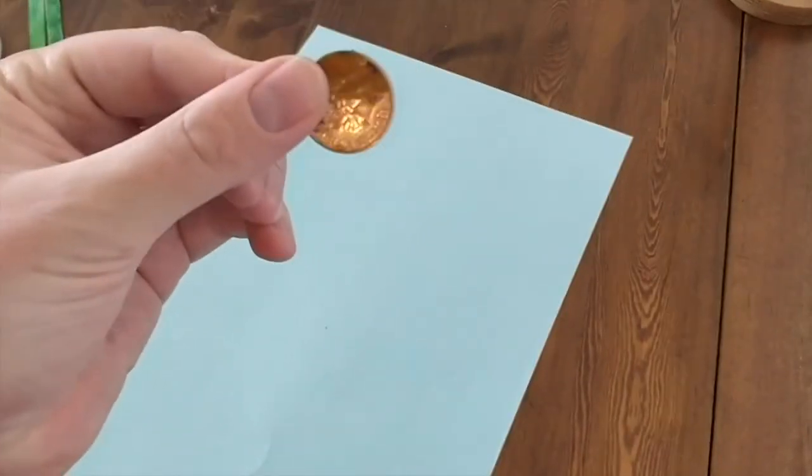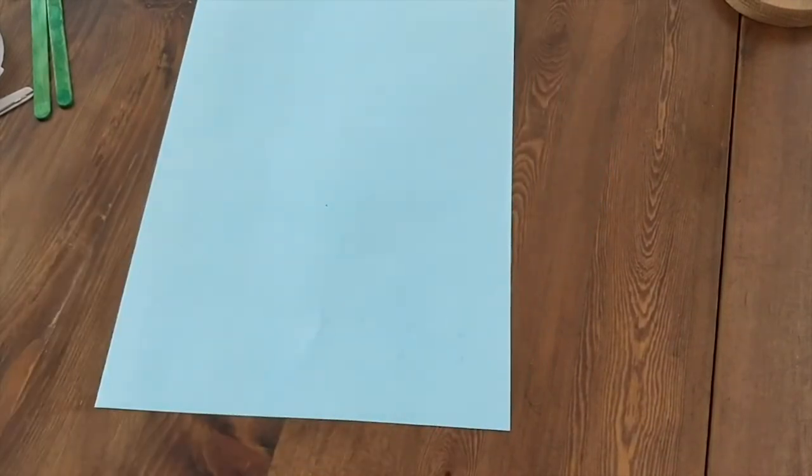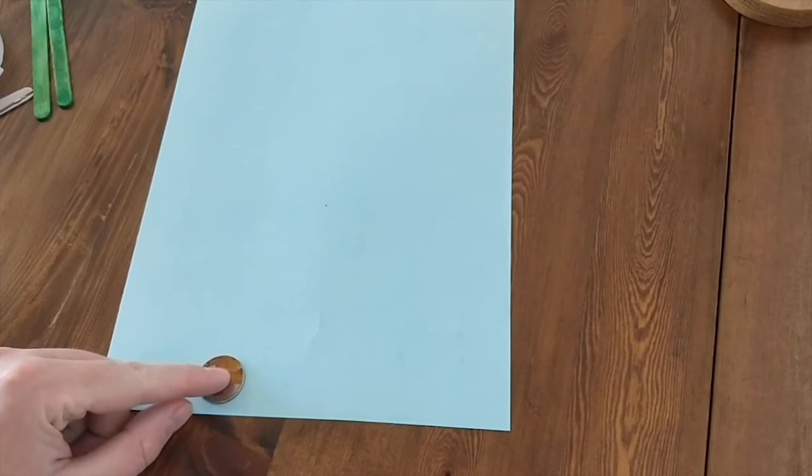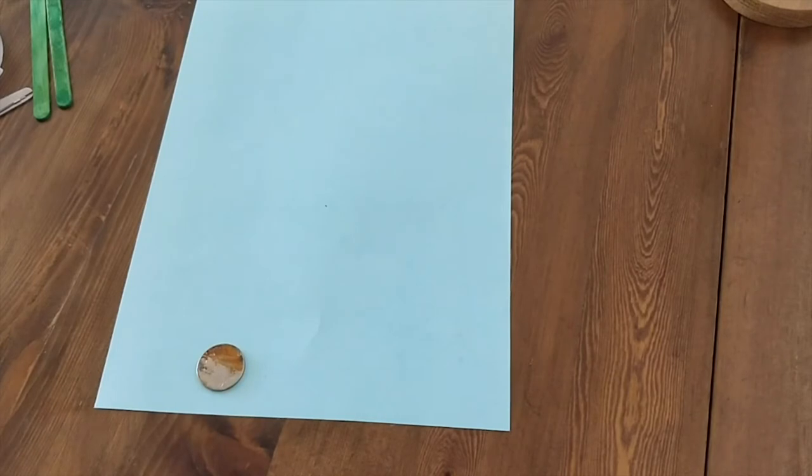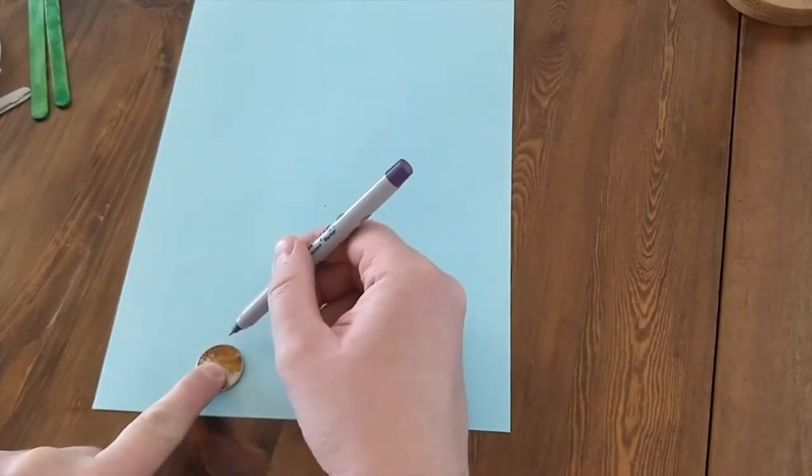So what you're gonna need is your pen and your penny to start off with. Let's move the paper up a little bit. Pop your penny down and get in quite close to the bottom of the paper so that when we cut it out we're saving as much card as possible. Then we're just going to draw around it.